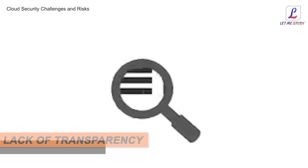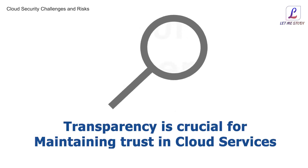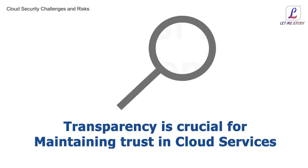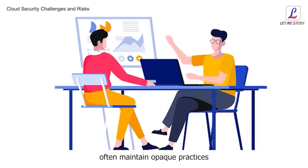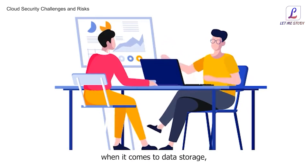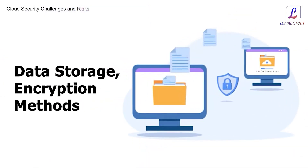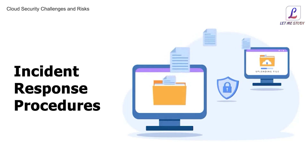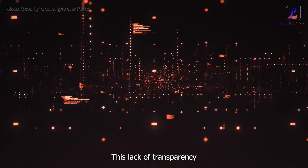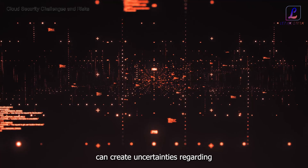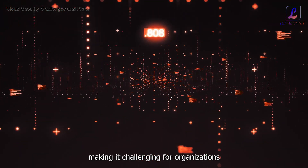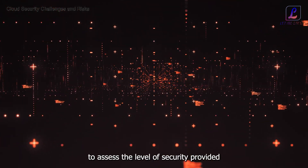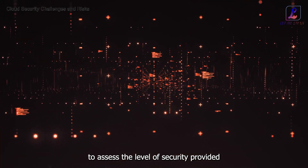Lack of transparency is crucial for maintaining trust in cloud services. However, cloud providers often maintain opaque practices when it comes to data storage, encryption methods, and incident response procedures. This lack of transparency can create uncertainties regarding data handling practices, making it challenging for organizations to assess the level of security provided.